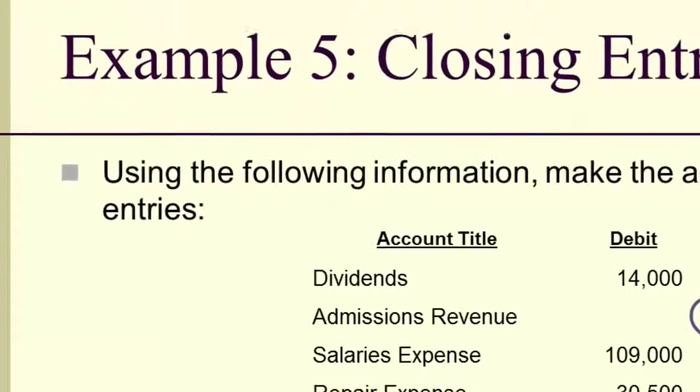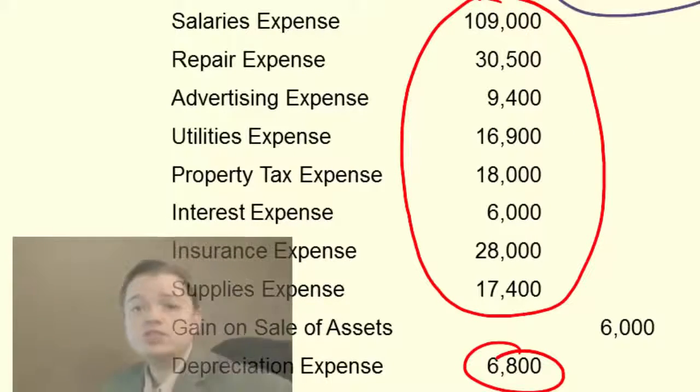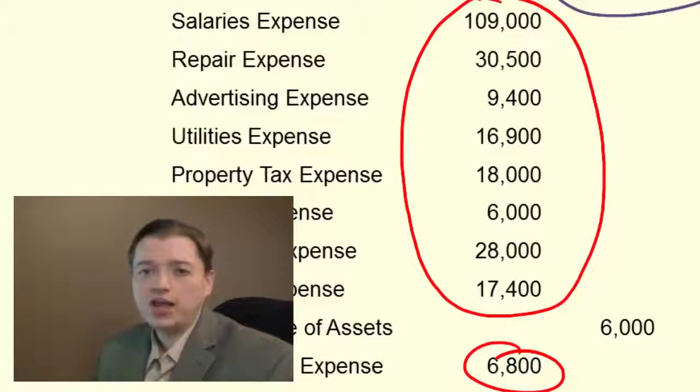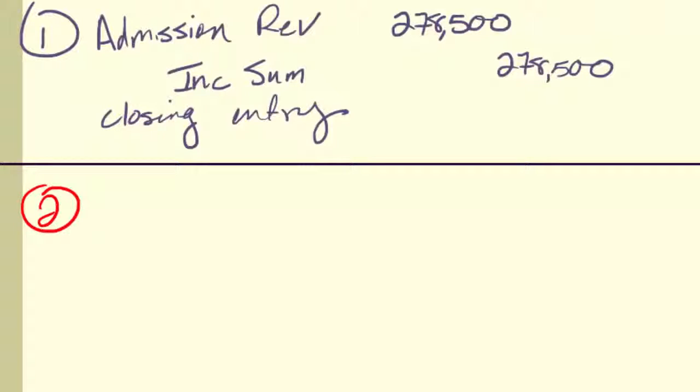Now step two is to close my expenses. So I have a bunch of expenses, all of these, and then I have depreciation expense down here. You have a choice here. You can close each account separately, that's totally fine. Most accountants, though, will shorten that and just do one entry for all the revenues, one entry for all the expenses, sometimes one entry for all the gains and losses, or two entries, one for gains, one for losses. They'll really shorten it and make it faster that way. We're going to follow that example and we're going to close all the expenses at once. So number two here, we're going to debit income summary so that we can credit all of these expenses. When I credit an expense, since it normally has a debit balance, then it goes to zero. So I've got salaries expense $109,000, repair expense $30,500, advertising expense $9,400.